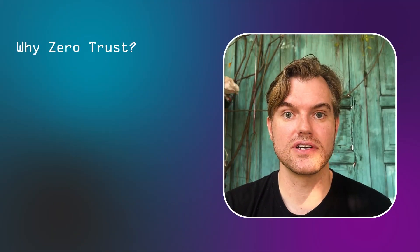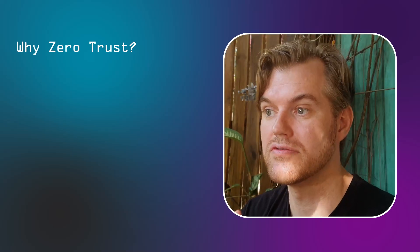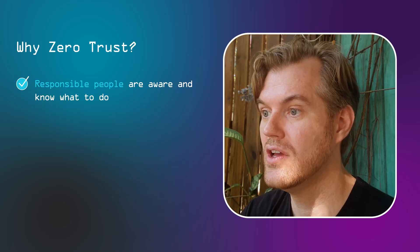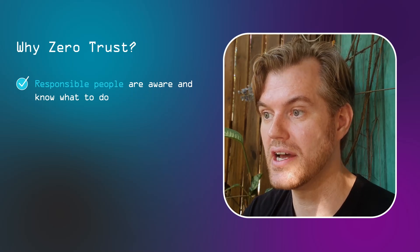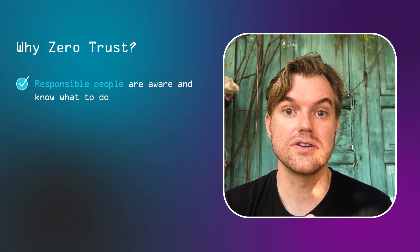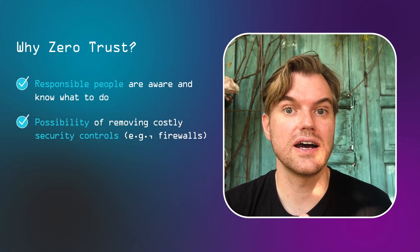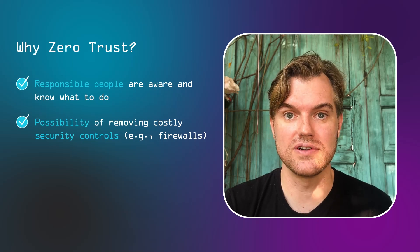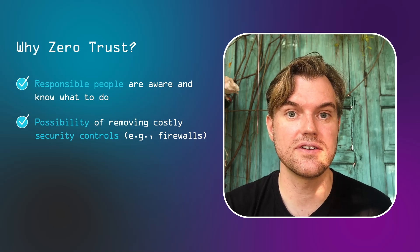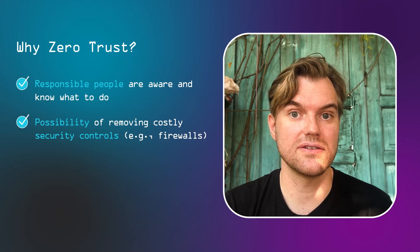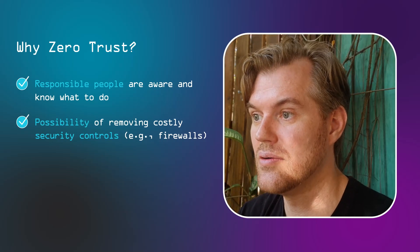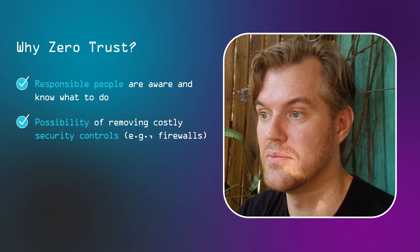So why do people like Zero Trust so much if it puts more responsibility in the hands of more people? First, because those people actually know what to do with that responsibility — each individual team knows who needs access to what and how that evolves over time. Secondly, you can remove some security controls that are hard to maintain and costly, like firewalls. You don't really need firewalls anymore if anybody on your internal network is treated like somebody on the internet. In our video on network segregation we still find a few cases where you need them, but by and large you can get rid of most of them.